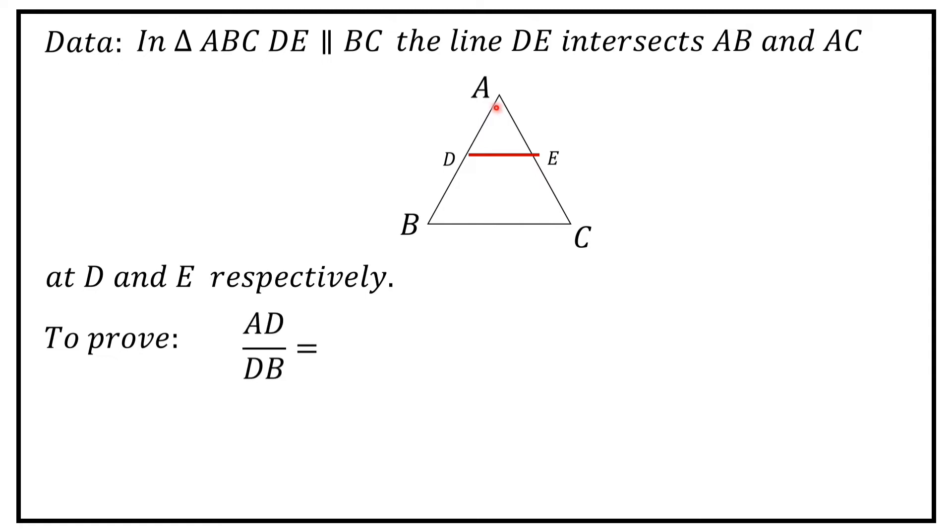To prove: AD divided by DB is equal to AE divided by EC. Construction: